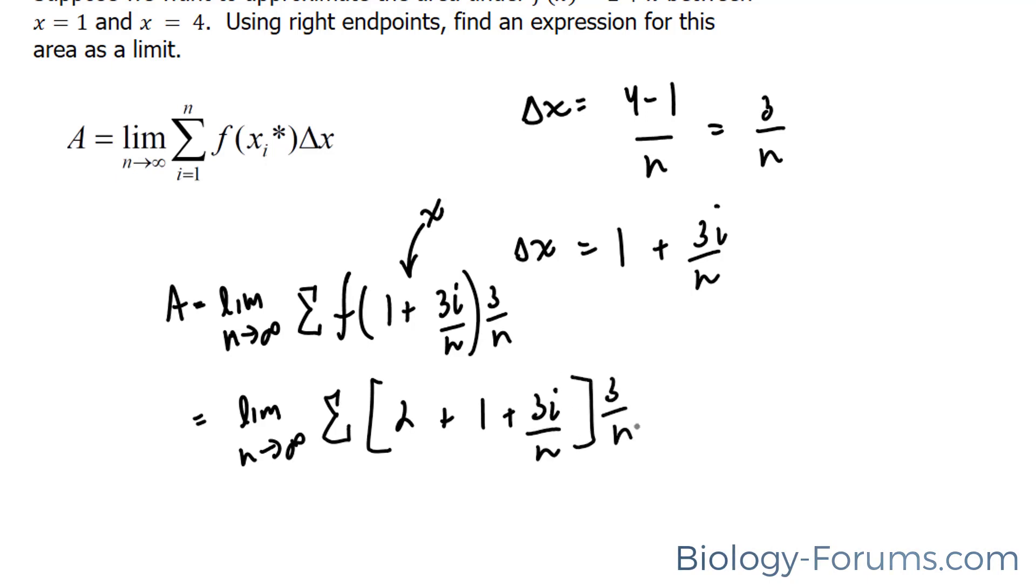And we are going to simplify this, and only this part right here, we end up with 3 plus 3i over n, 3 over n. And there you have it.